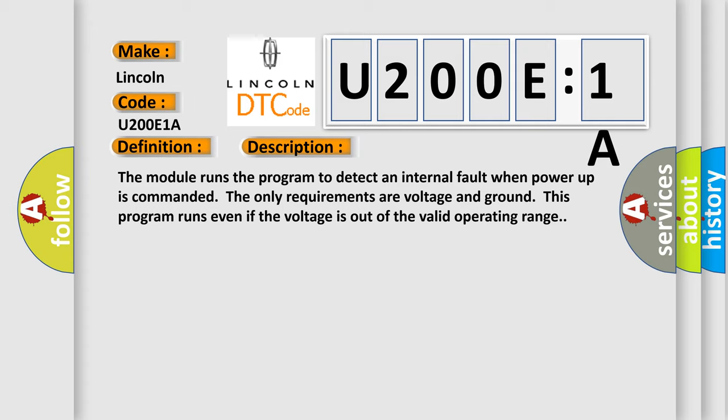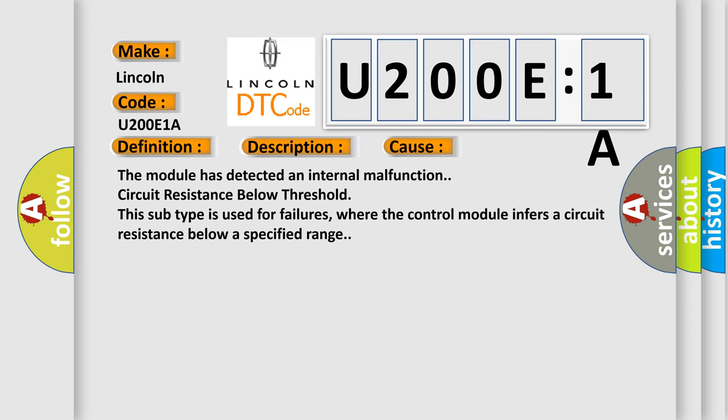This diagnostic error occurs most often in these cases: The module has detected an internal malfunction circuit resistance below threshold. This subtype is used for failures where the control module infers a circuit resistance below a specified range.